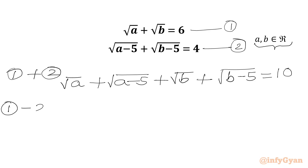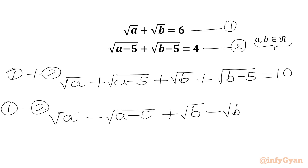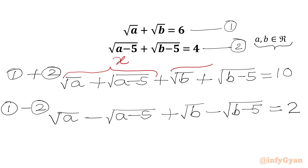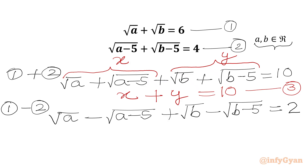Now we subtract the second equation from the first. We get: square root a minus square root (a minus 5) plus square root b minus square root (b minus 5). We introduce substitutions: let x equal square root a plus square root (a minus 5), and y equal square root b plus square root (b minus 5). Then we can write x plus y equal to 10 — this is equation 3.